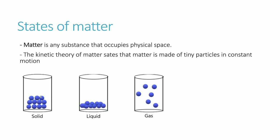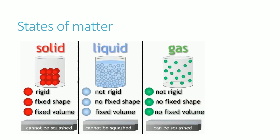In all three states, particles are constantly moving, but the key difference is the spacing between particles, which leads to different properties. For example, a solid has a fixed volume because the particles are stuck together, whereas a gas has no fixed volume due to its large particle separation. Let's compare the properties of solids, liquids, and gases.